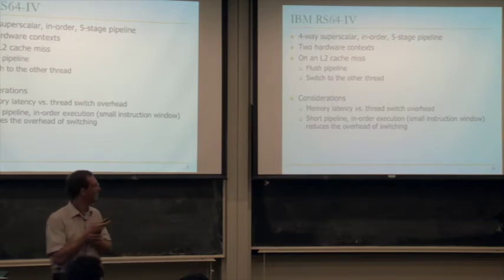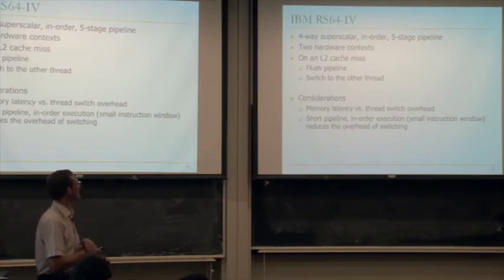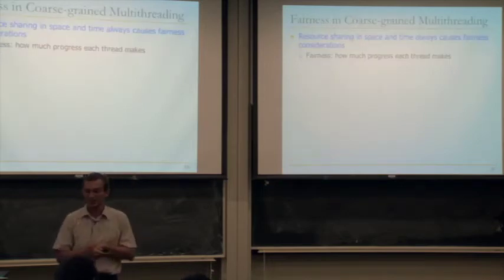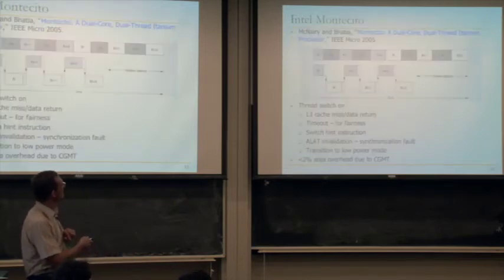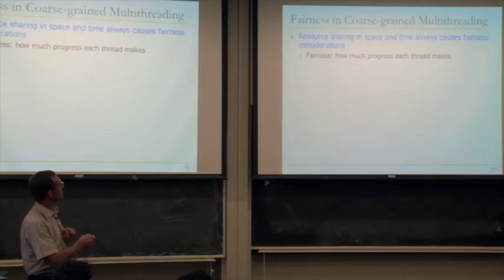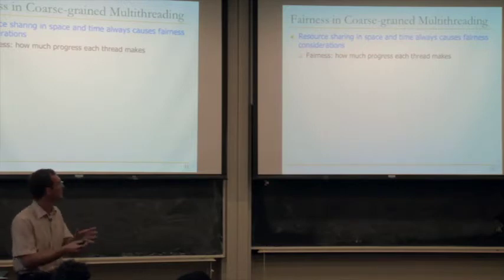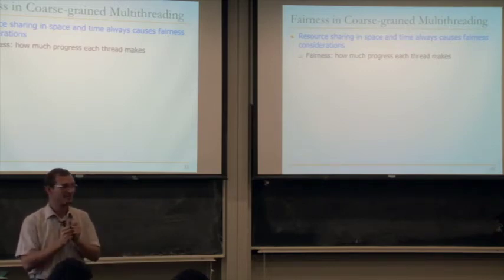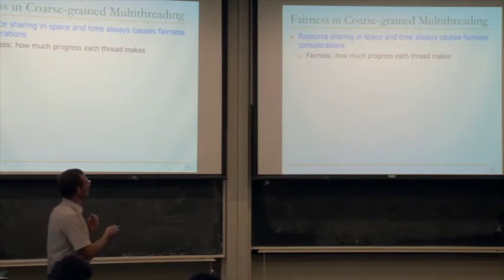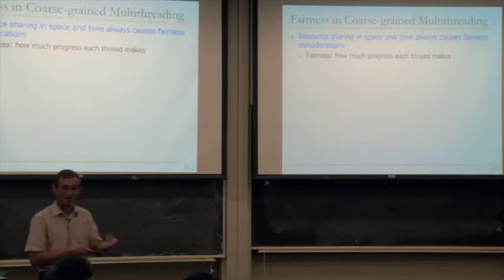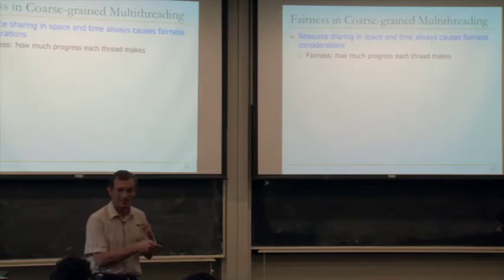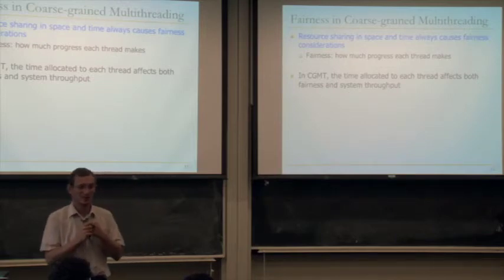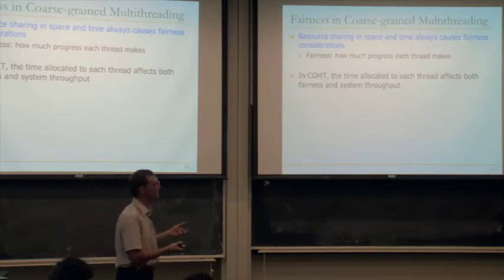We covered some real machines that did coarse-grained and fine-grained multi-threading, including Intel Montecito. Whenever you share resources in space and time, you always run into fairness considerations. If you're sharing resources, threads make different progress because they may be utilizing those resources differently. In coarse-grained multi-threading, one resource is basically time-multiplexing the pipeline across threads, and how much time is allocated to each thread determines both fairness and throughput.